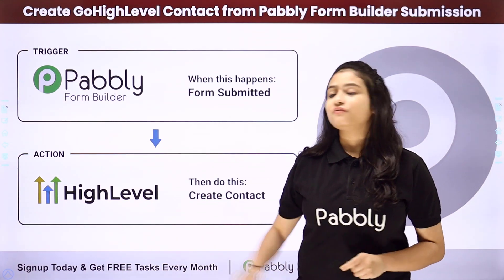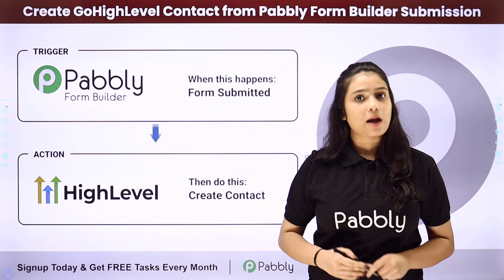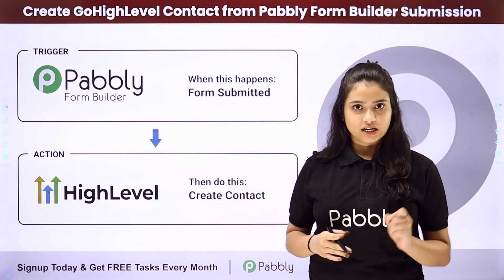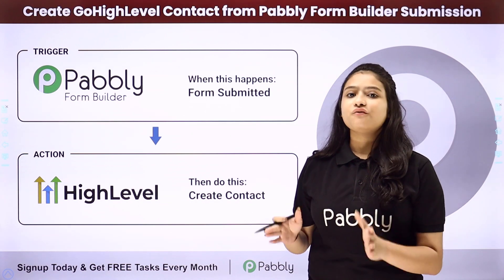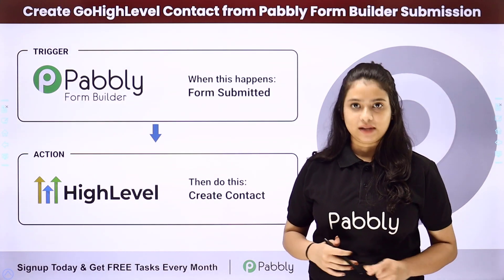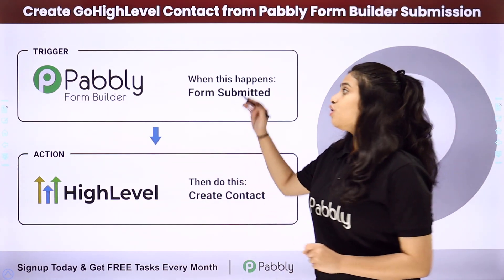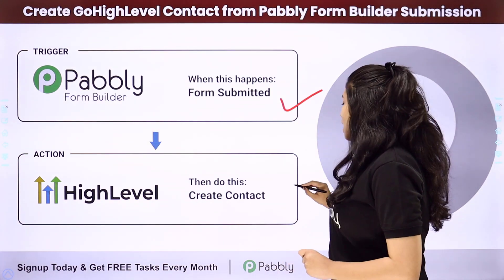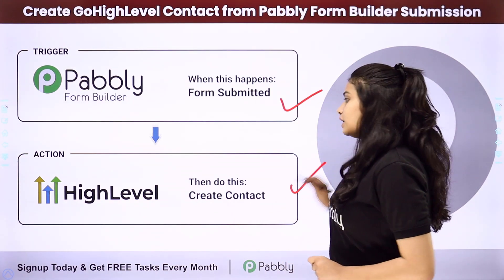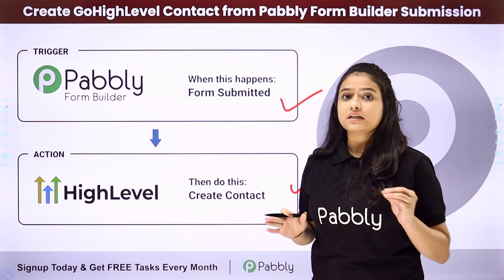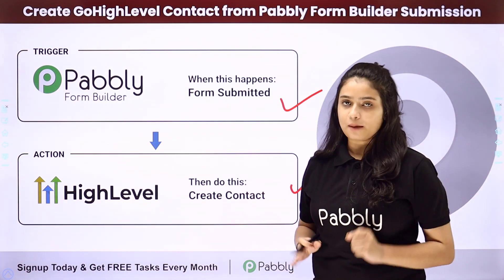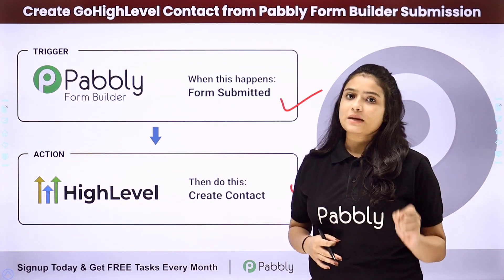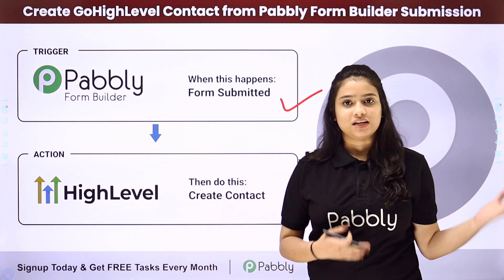To do that, we have to integrate both these applications. Because they do not have any kind of native integration between them, we are going to take the help of Pabbly Connect. We will have Pabbly Form Builder as our trigger and Go High Level as our action, setting up an integration between both applications using Pabbly Connect. Now to learn this full automation step by step, let me take you to my screen.